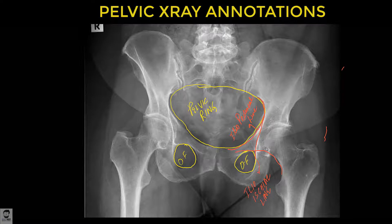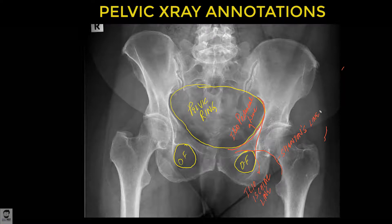These are two important lines to understand. Then, continuing from the medial side of the femur with the pubic rami, you have Shenton's line. This is a very important line because in femoral neck fractures, as we will see later, this line is broken — and that's one of the key things to identify.